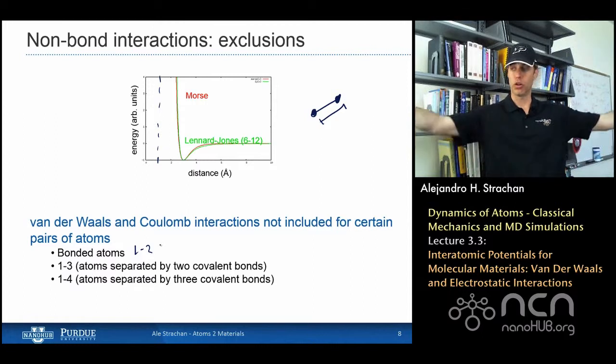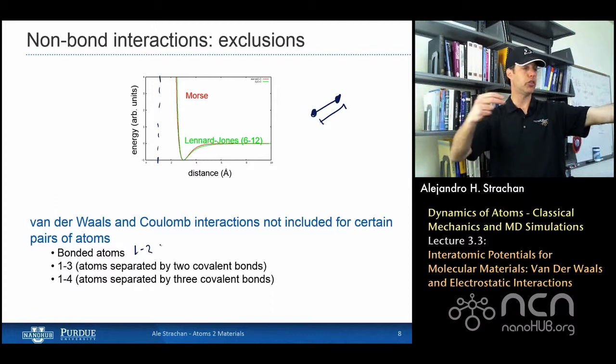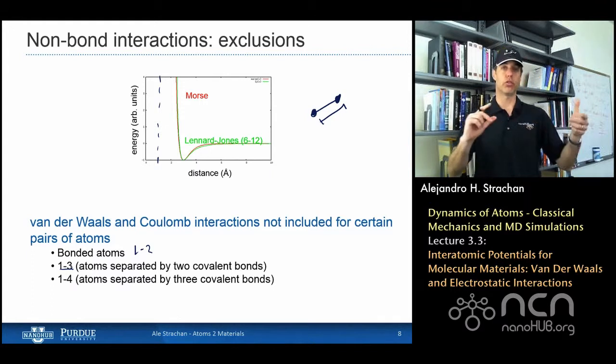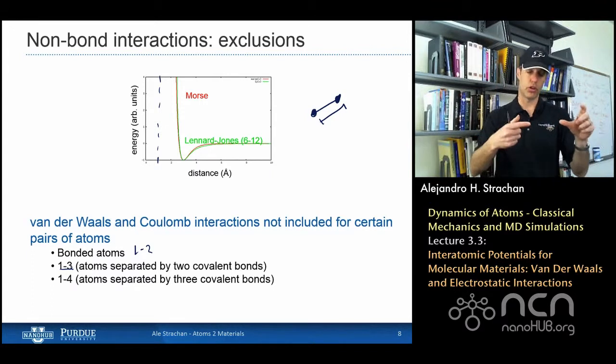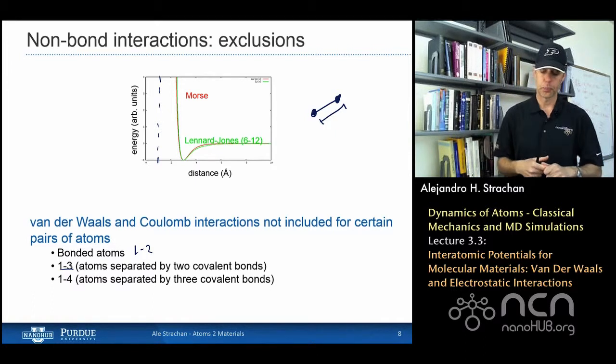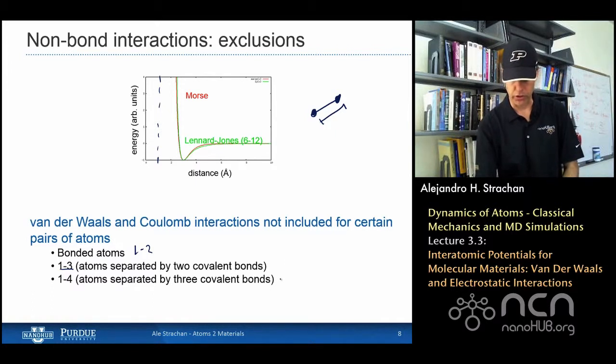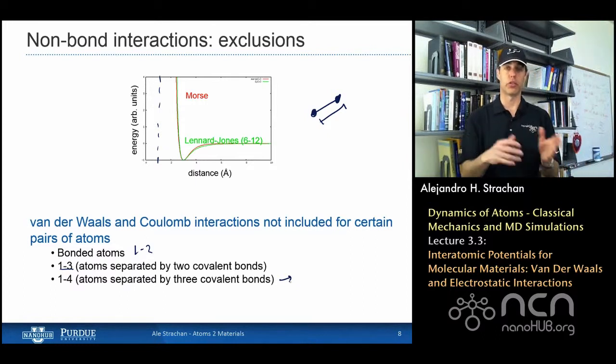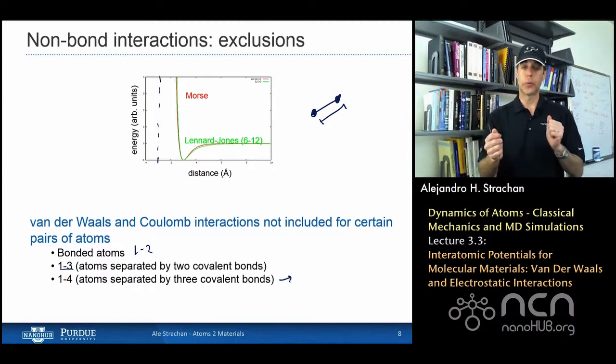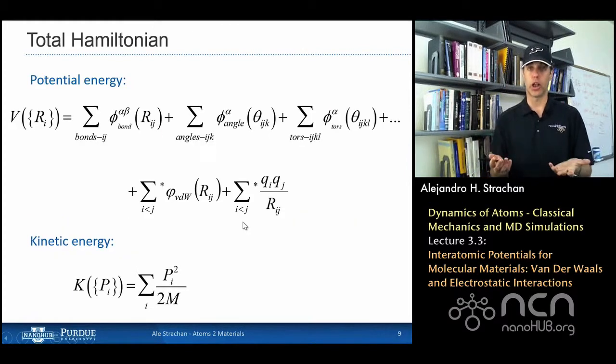So when we compute van der Waals and Coulomb interactions, we ignore atoms that are bonded, those are called one-two pairs. If two atoms are chemically bonded, you don't compute Coulomb or van der Waals. You also ignore one-threes, so if atom I is bonded to J and J is bonded to K, the first and the last don't interact. And typically you don't compute the interactions between one-fours, atoms that are separated by four chemical bonds. Sometimes some potentials simply scale the van der Waals or Coulomb energies between one and four atoms, others ignore them completely. Those are called exclusions.